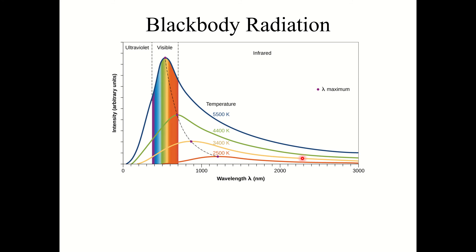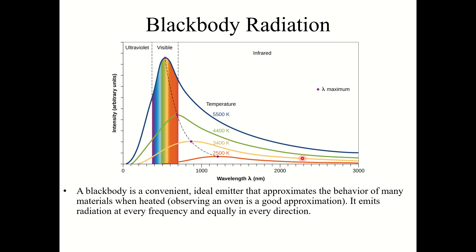Now let's talk about black body radiation. A black body is a convenient ideal emitter that approximates the behavior of many materials when heated. Think about the dark coils in an oven — they're a black body, meaning they absorb all types of radiation equally. When heated, they emit radiation at every frequency equally in every direction. We're imagining a body that absorbs all frequencies equally and then emits all frequencies equally, changing as it's heated.